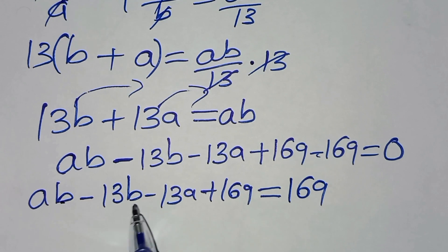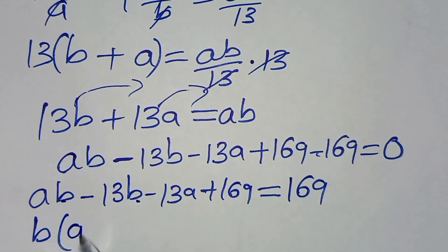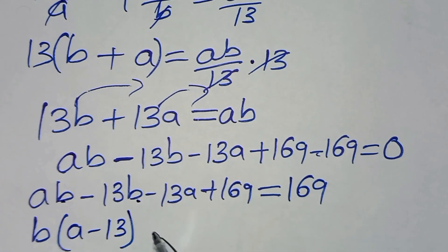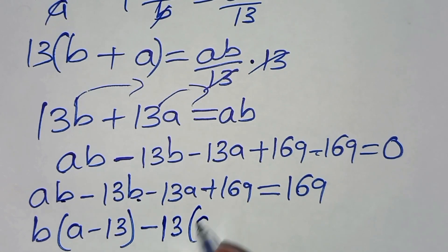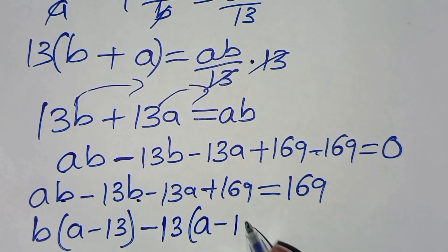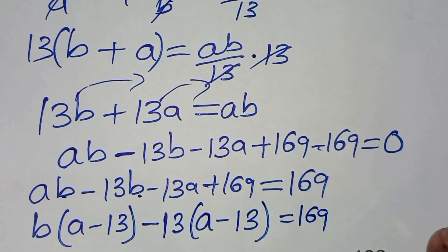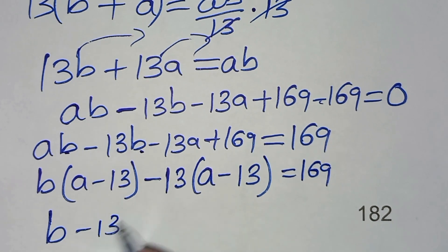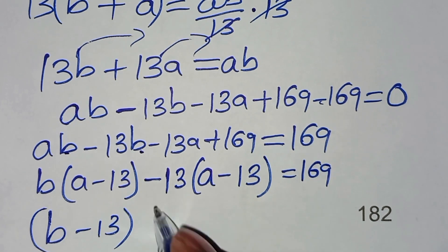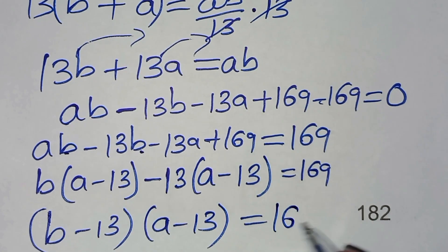Since B is common in the first two terms, we factor out B to get B times (A minus 13). Then 13A and 169 share a factor of 13, giving 13 times (A minus 13). So we have (B minus 13)(A minus 13) equals 169.